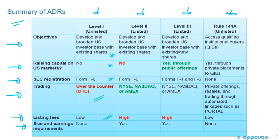Level 2 listed ADRs also have the objective of developing and broadening the U.S. investor base with existing shares, but are not raising capital on U.S. markets. They use the same F6 form but are listed on the New York Stock Exchange, NASDAQ, or Amex. Therefore, they have high listing fees and yes, there are size and earnings requirements in order to be listed.